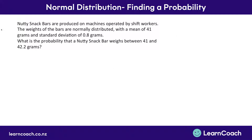Here's a type of question you're going to get, where you're asked to find a probability. It will say something like: nutty snack bars are produced on machines operated by shift workers. The weights of the bars are normally distributed with a mean of 41 grams and a standard deviation of 0.8 grams. We need to find the probability that a nutty snack bar weighs between 41 and 42.2 grams.